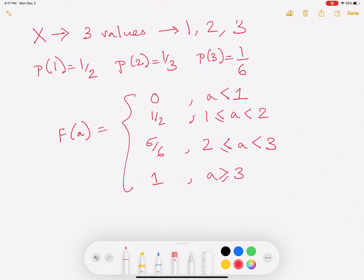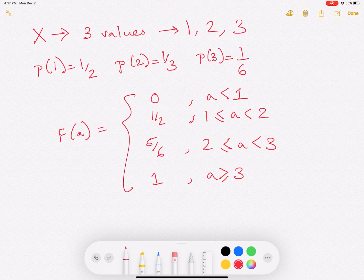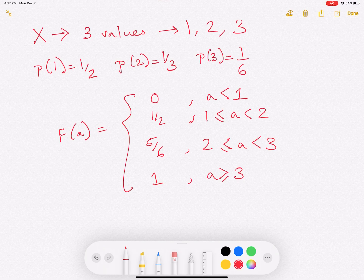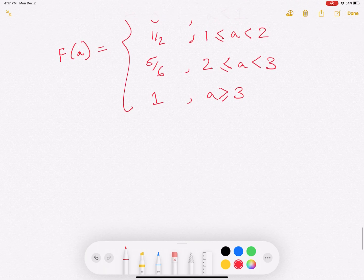And when A becomes greater than or equal to 3, when A becomes, then F of A will be 1. Because you're adding them. So by the time you cross A greater than or equal to 3, all the probabilities will add up to 1.